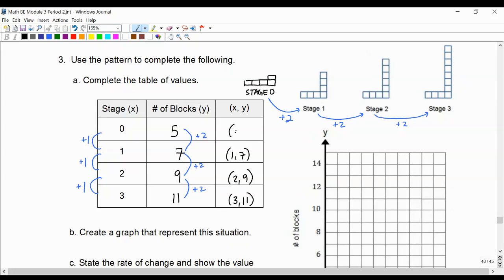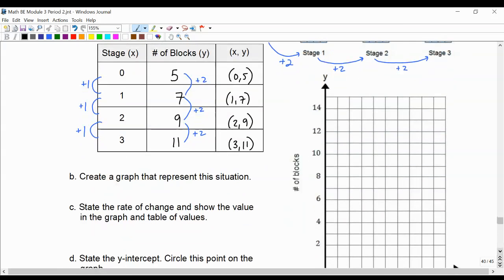And then we'll include our ordered pair, which is (0, 5). And we'll start to look at the other questions.